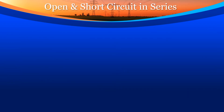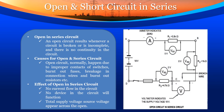Open and short circuit in series. An open circuit results whenever a circuit is broken or incomplete and there is no continuity in the circuit. Causes for open circuit in a series circuit include improper contacts of switches, burnt-out fuses, breakage in connection wires, and burnt-out resistors. Effect of open in series circuit: no current flows, and therefore no device in the circuit will function. The total supply voltage will appear across the open.